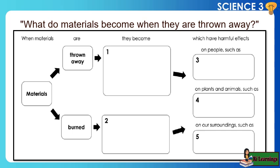Let's take a look at the concept map shown below. This chart gives us an overview of our lesson for the week. It shows what happens to materials when they are either thrown away or burned, and how these actions can lead to harmful effects on people, animals, plants, and the environment.